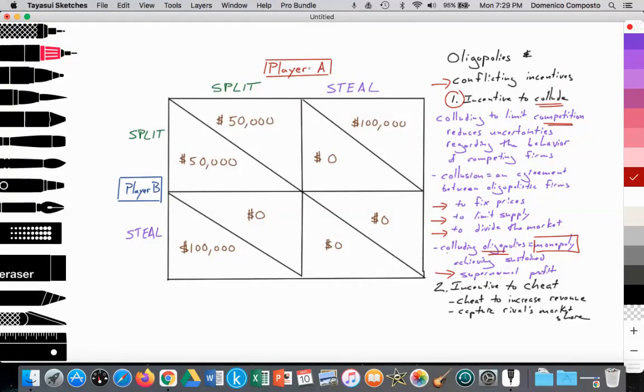We see this here, player A and player B, like two oligopolistic firms, colluding, deciding to split the $100,000 so that both players get $50,000. Clearly, this is the best rational choice, up in the upper left box.